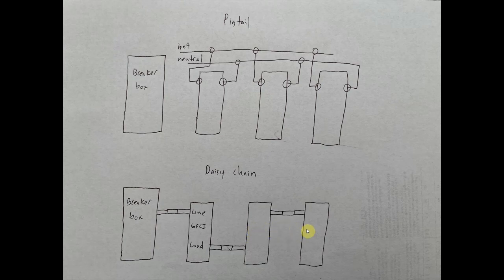Whereas in a pigtail they're in parallel, it doesn't matter. Daisy chaining is called in series, so basically again they're all powered together via the outlet that is upstream from the outlet. So this one powered by this one.